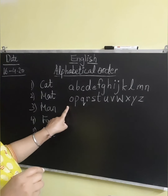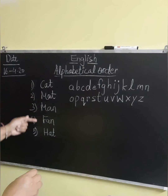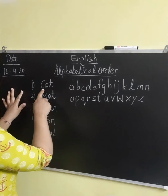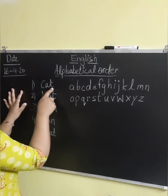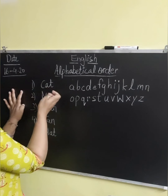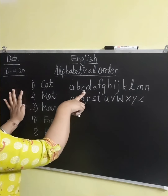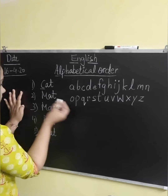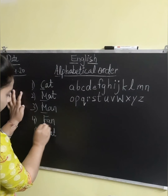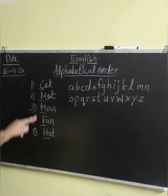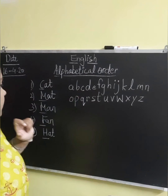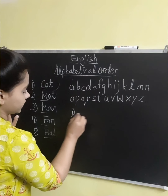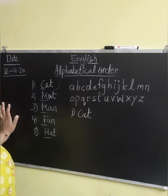Now according to these alphabets we will arrange these words in alphabetical order. So let's start. The first word is cat. Cat starts from the letter C and C is the third letter in the alphabet. We will check the rest of the initial letters of the words: M, M, F, and H. So the rest of the letters are not coming before C. So cat will be at the top — cat is first in the alphabetical order.